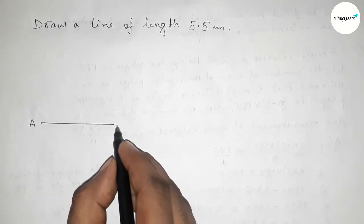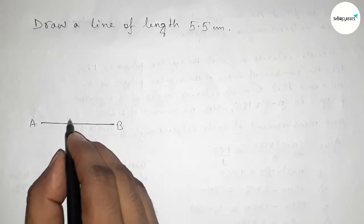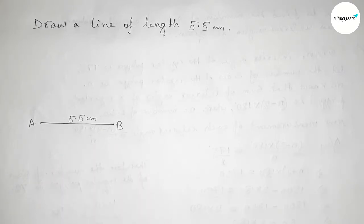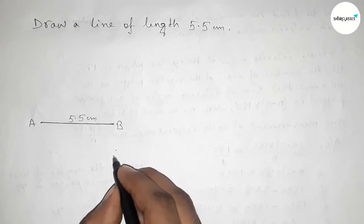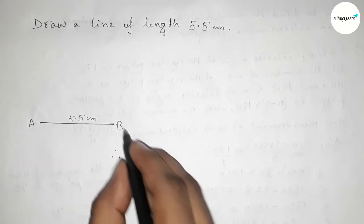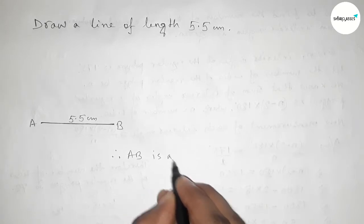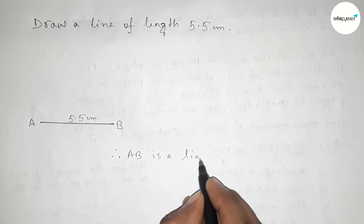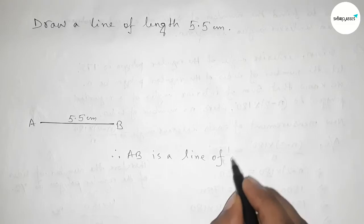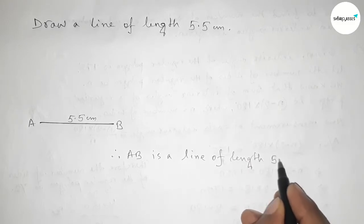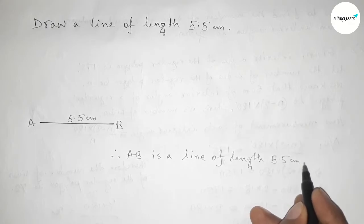So AB is a line of length five point five centimeter. Therefore AB is a line of length five point five centimeter, and by this way you can draw a line of length five point five centimeter.